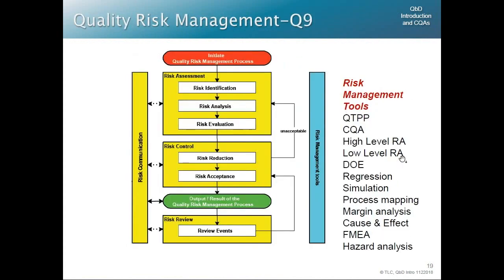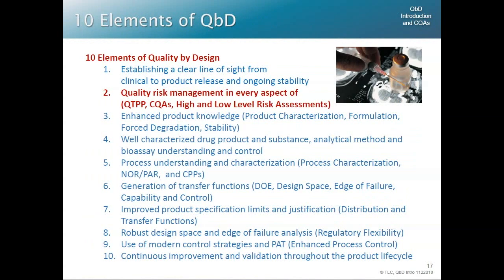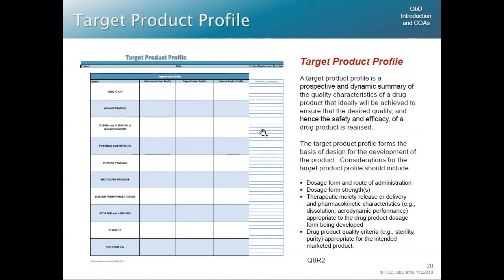Welcome back. To remind you of our 10-point journey — we've already done the clear line of sight, showing what that looks like and how it connects from the very beginning of the drug program into validation. Next, we want to look at how you really do quality risk management. It's a good idea, but practically how do you do that? We use a series of templates for organizing this information, and I want to show you those templates.